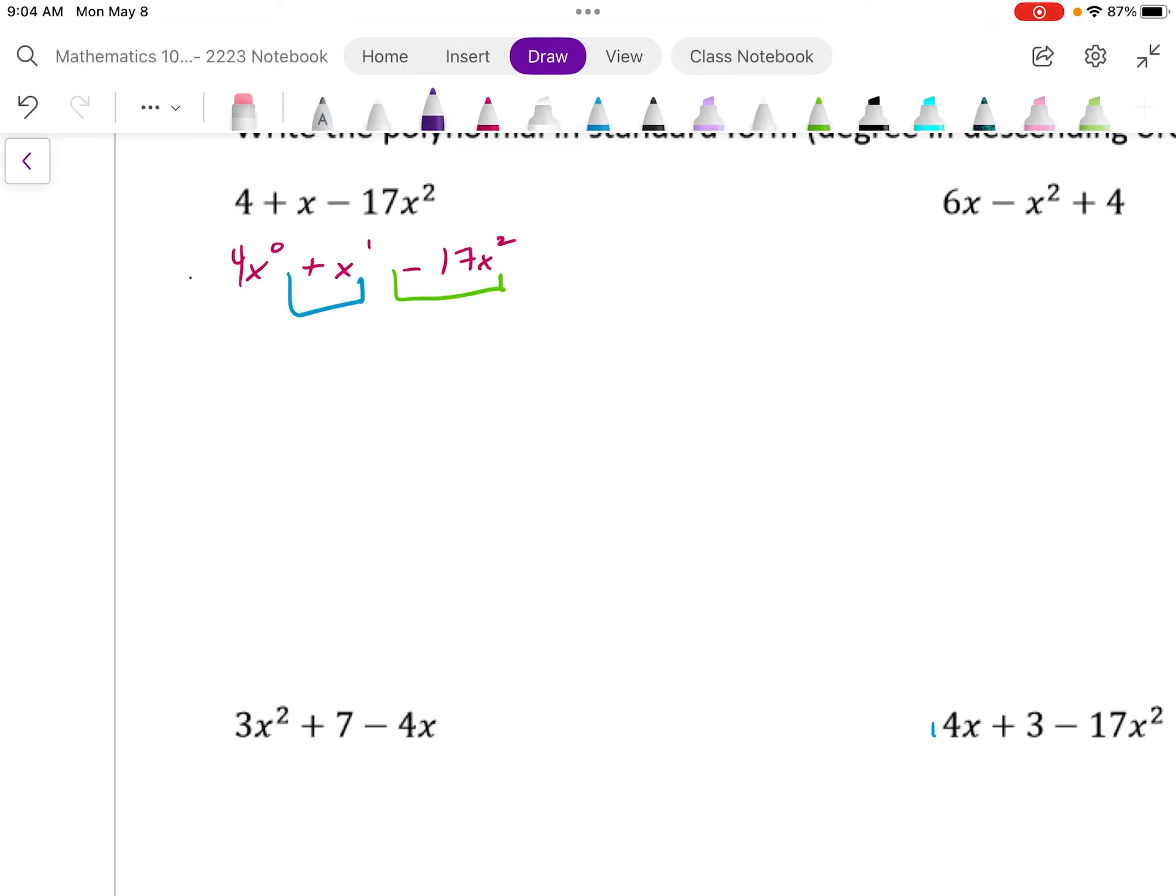The next term that has the next highest exponent is this plus x to the power of 1. My last highest term is my zero degree term and that's 4x to the power of 0. So if I was writing this I would write this as negative 17x squared plus x plus 4. Now one thing I want you to notice is the negatives and positive sign stayed with their respective term and that's the way we got to do it.